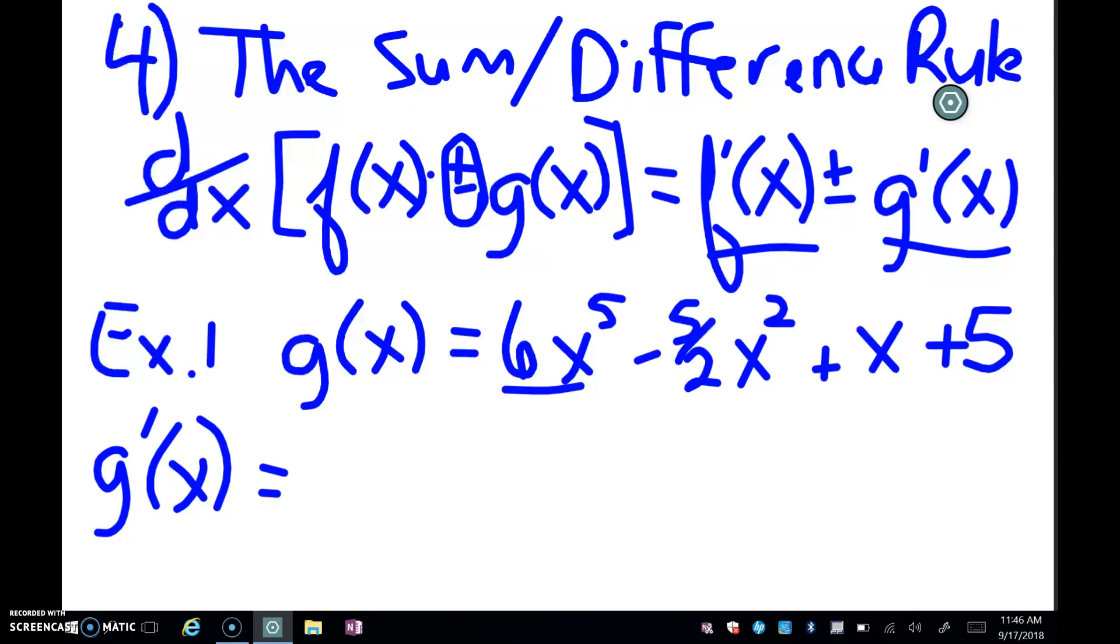We have 5 times 6 is 30. Take 1 off the power, so that changes to x to the fourth power. Write your minus sign down. And the second term, we bring the 2 down, so 5 halves times 2 is 5. Take 1 off the power, so that makes that x to the first power.